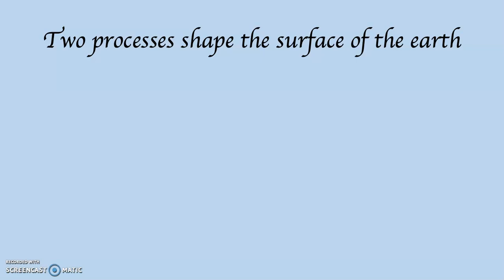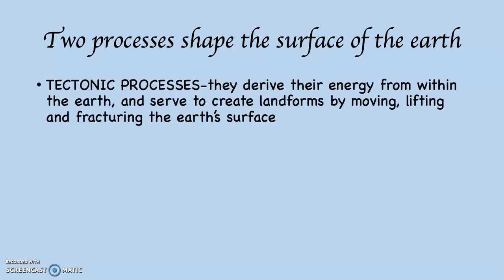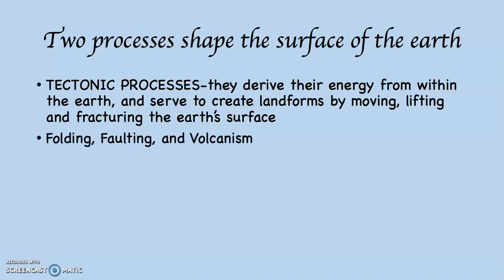Two processes shape the surface of the planet. One of these processes, our emphasis in section three of this class, is called the tectonic processes. These processes derive their energy from within the Earth — they get their energy from inside the planet, and they serve to create landforms by moving, lifting, and fracturing the Earth's surface. There are three tectonic actions: folding, faulting, and volcanism.